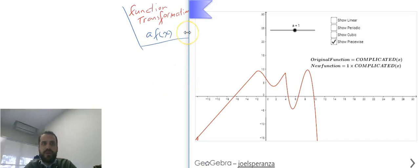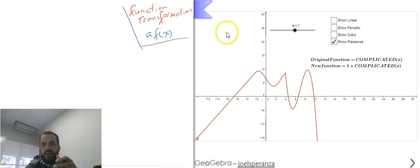Here's our third function transformation and it's a times f of x. So I'm taking f of x and I'm multiplying it by a. Now when you start with a function, the a value is always just one because it's one times f of x. So that's sort of our starting position.